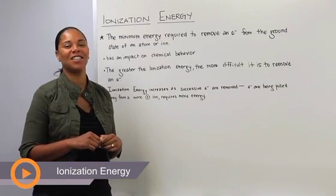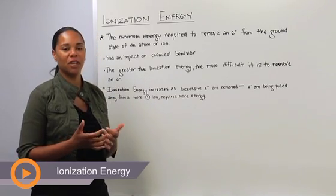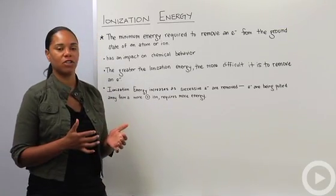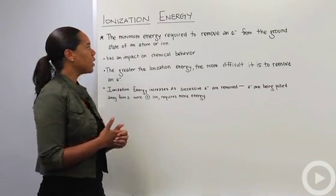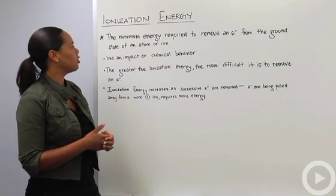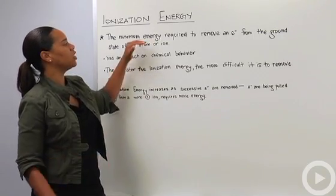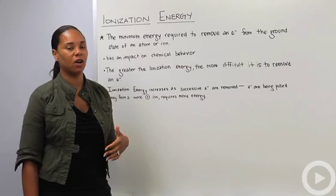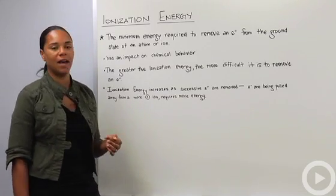Let's talk about ionization energy, which is another property that comes from our understanding of the periodic table. The definition of ionization energy is that it's the minimum energy required to remove an electron from the ground state of an atom or an ion.